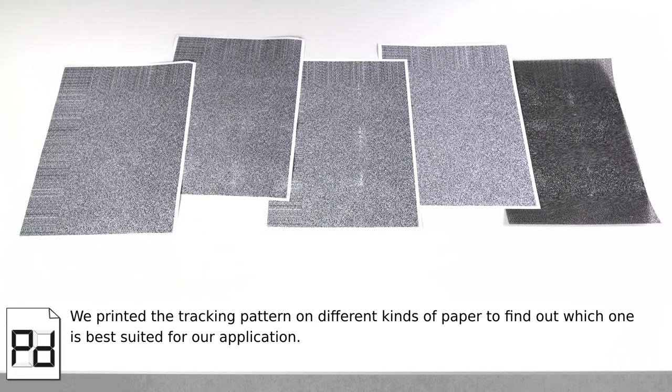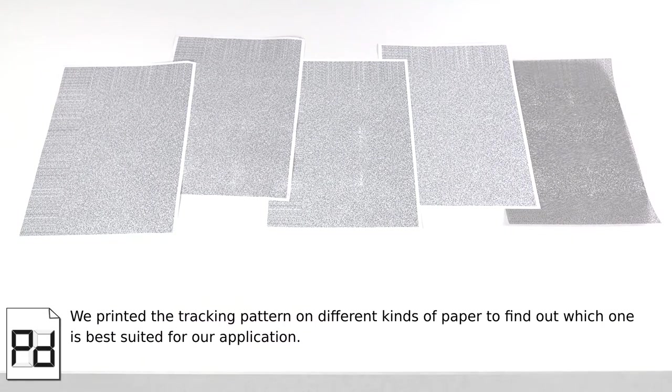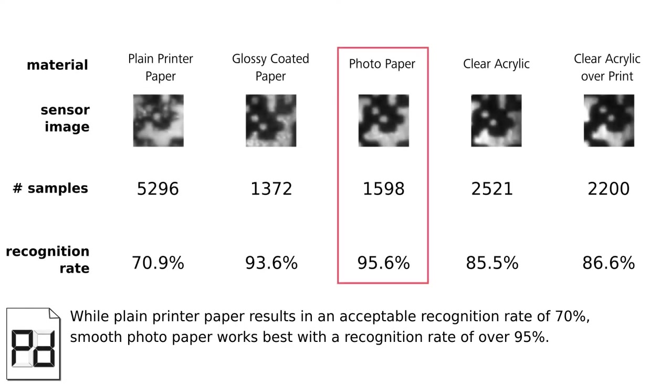We printed the tracking pattern on different kinds of paper to find out which one is best suited for our application. While plain printer paper results in an acceptable recognition rate of 70%, smooth photo paper works best with a recognition rate of over 95%.